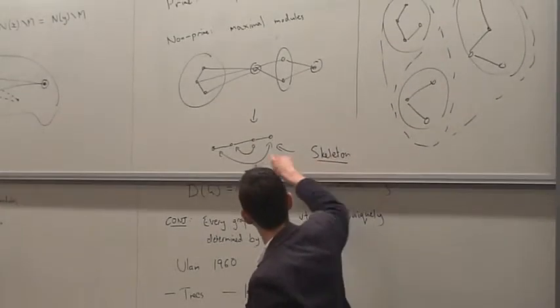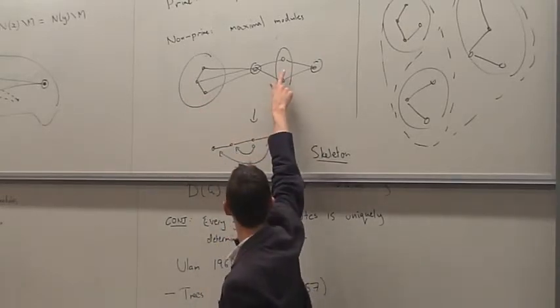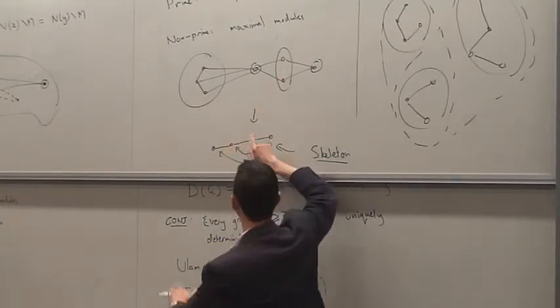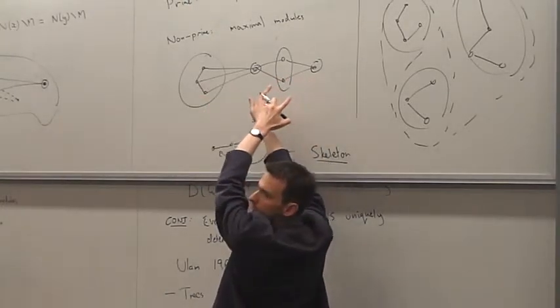So what this says is that I know that this module has to be one of these two end vertices and this one has to be one of the two middle ones, but I don't know whether it goes like this or maybe whether the big one and that one are next to each other.